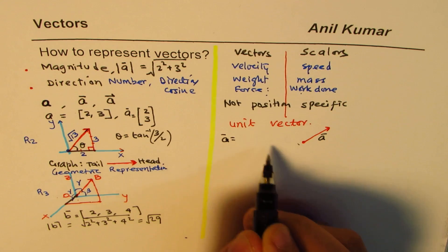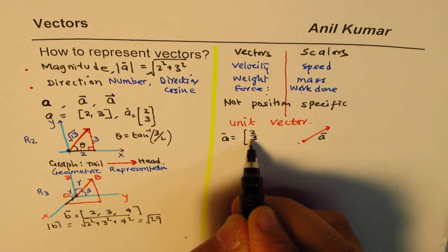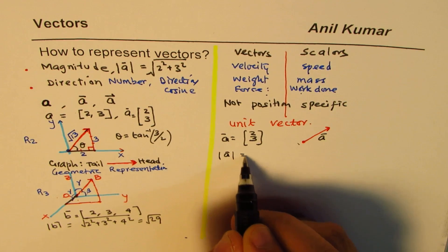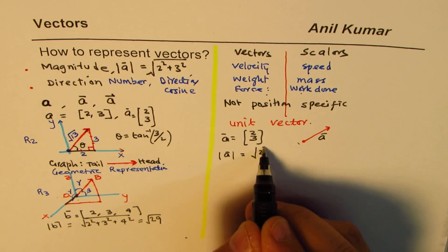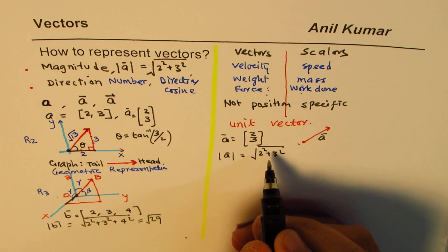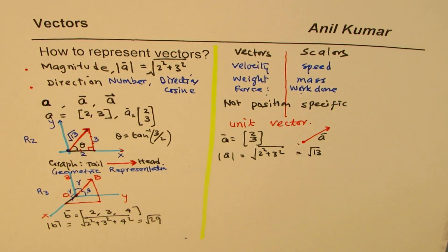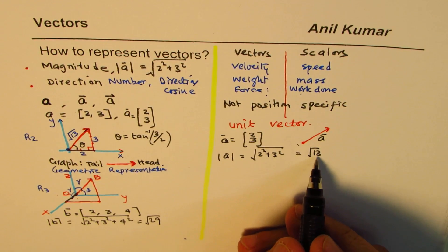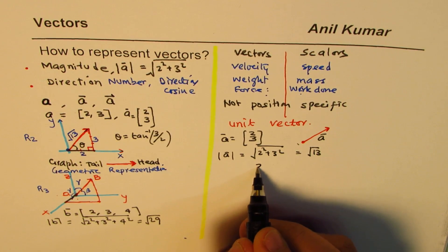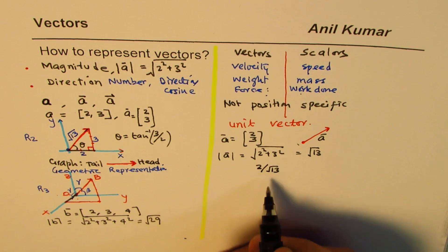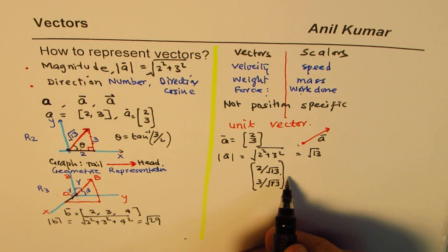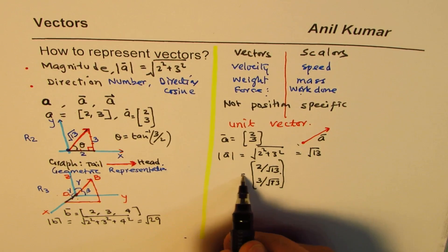Let's find the unit vector of vector a = (2, 3). We know the magnitude is √(2² + 3²) = √13. Now, what happens if I divide each component by √13 — that is, 2/√13 and 3/√13? The resulting vector has magnitude 1.